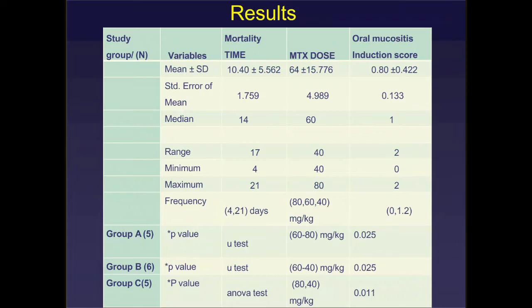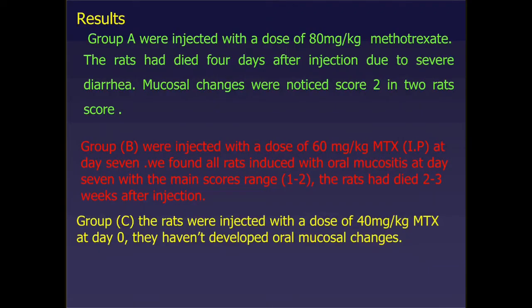The results showed statistically significant differences between the animal groups and the dose of cytotoxic therapy. In Group A, injected with 80 mg/kg, all rats had died four days after injection due to severe GIT toxicity, especially diarrhea. Mucosal changes were only noted in two rats shortly after injection.